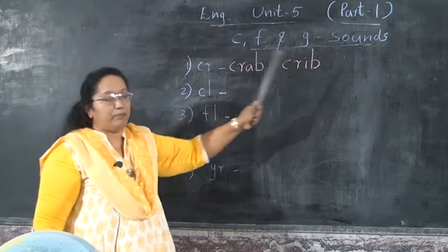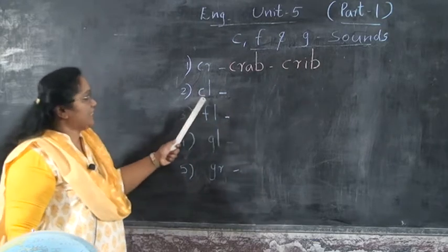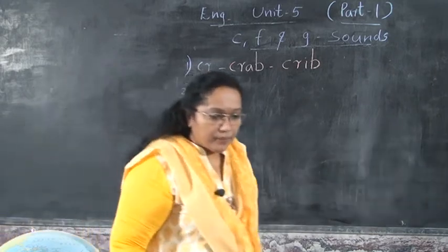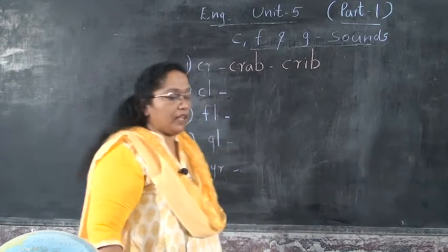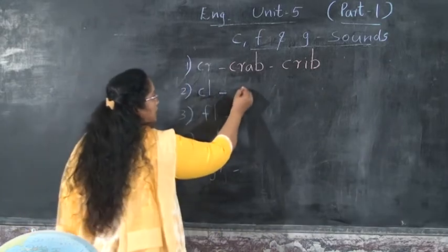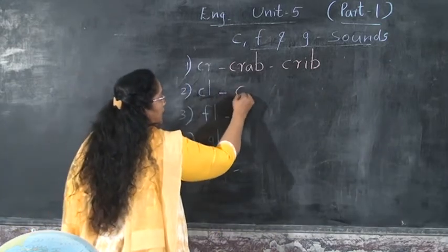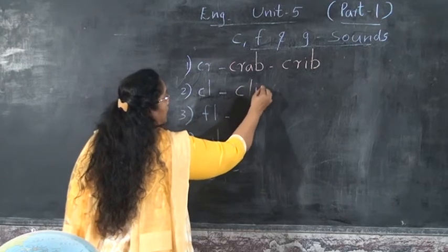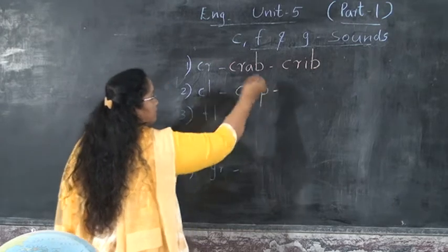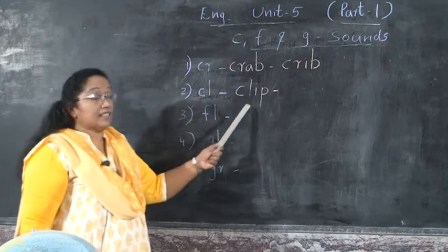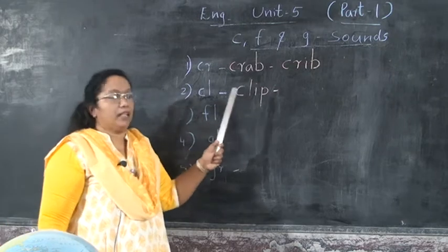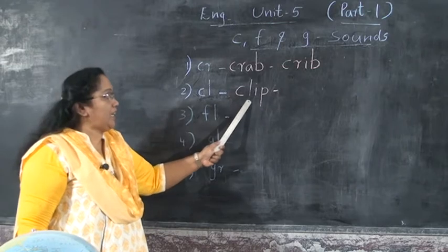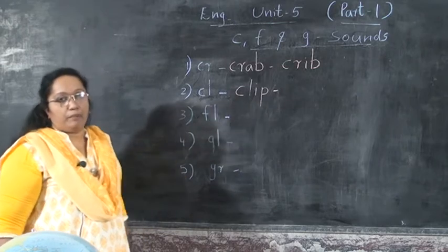Crab and crib. Next is CL — clip. Clip. C-L-I-P. Clip. What is this? Clip. Spell the word clip: C-L-I-P. Clip.